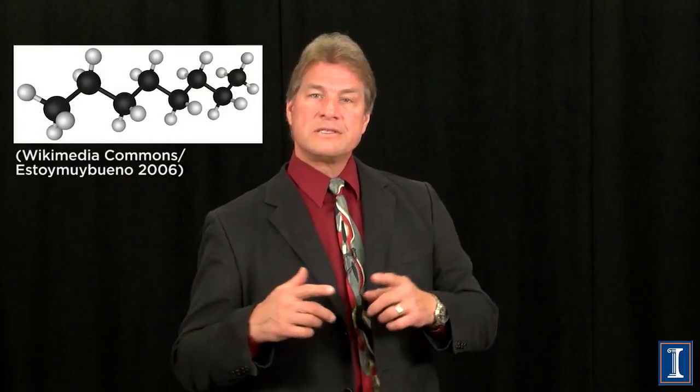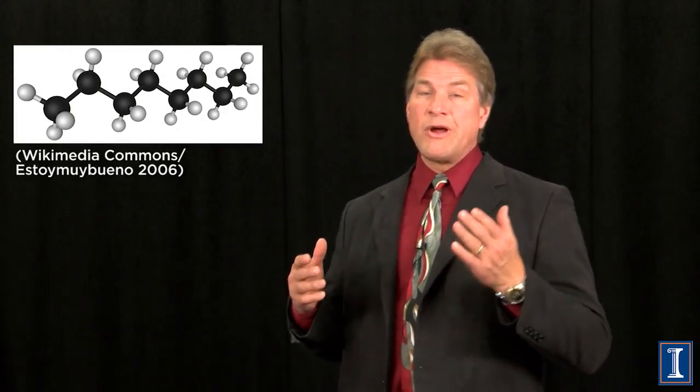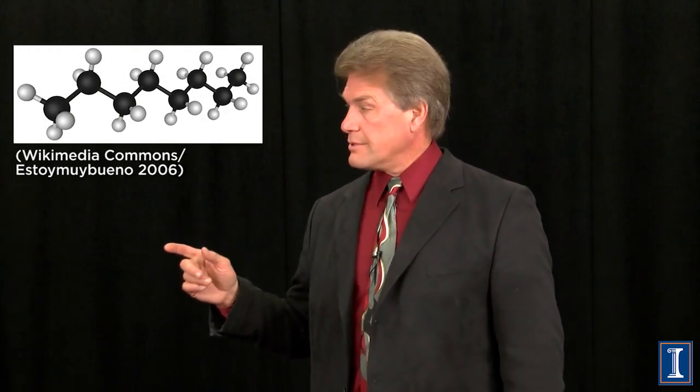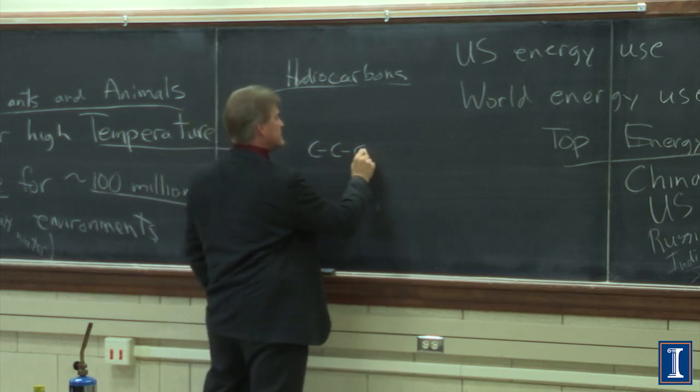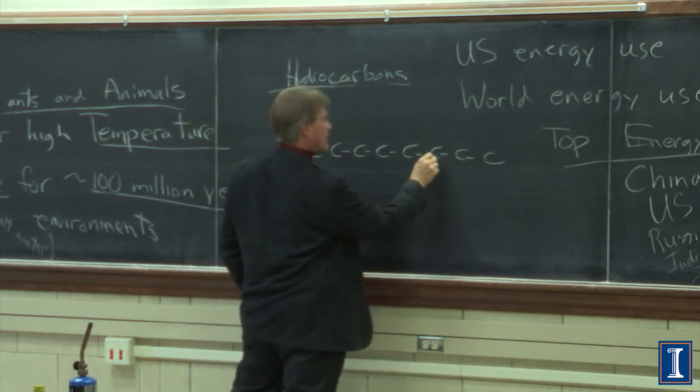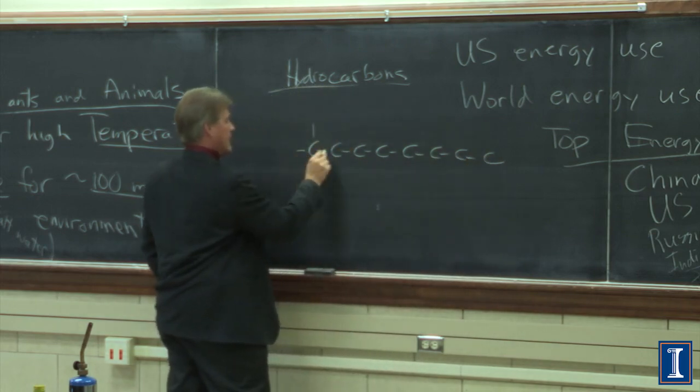But it's a resource that our planet is fairly rich in. After the stuff is buried, it turns into carbon chains, predominantly single carbon chains. The most prevalent constituent of crude oil is a carbon chain with eight carbons — C, C, C, C, C, C, C, C — eight carbons all in a row with hydrogens on them.